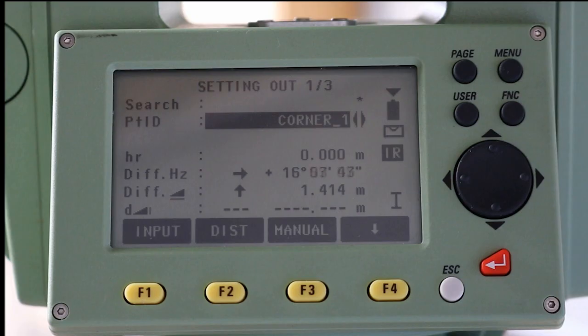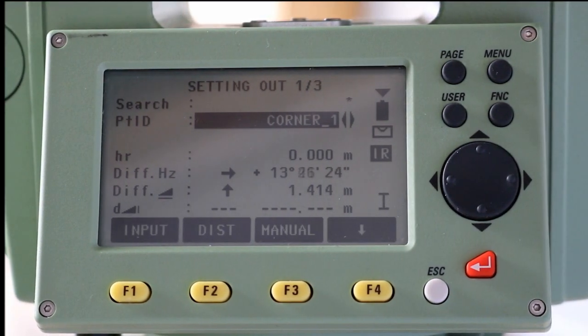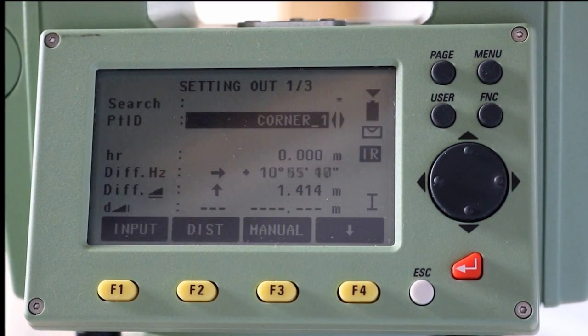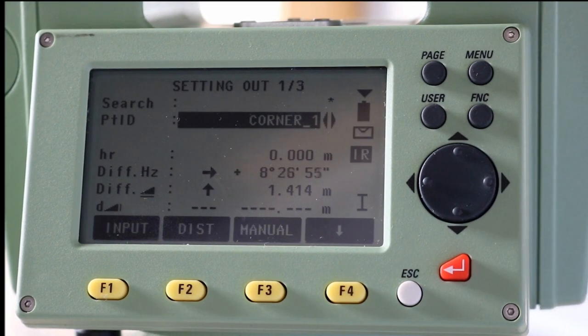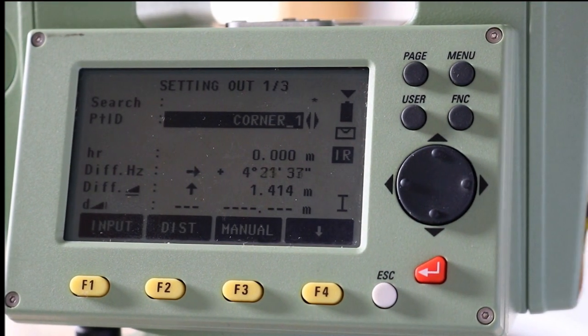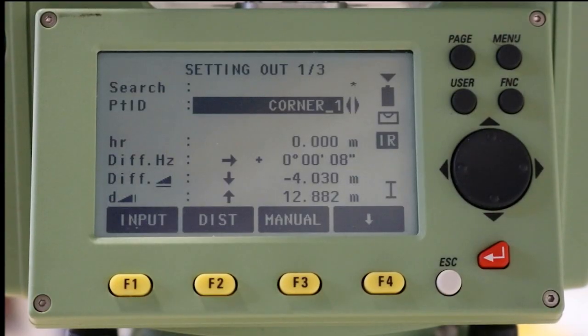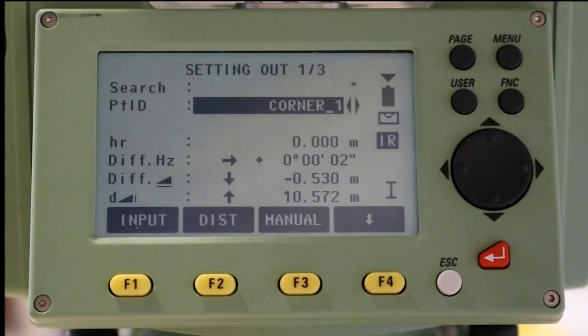Starting with corner 1, rotate the total station in the direction shown on screen until the difference in the horizontal angle is approximately zero. This means that the total station is now looking along the line on which the point to be set out is located. Instruct the chainboy to move the distance indicated on the screen. Select distance and wait for the total station to determine the distance the chainboy is holding the prism from the desired point. Repeat this until the distance is down to zero and then mark your point.